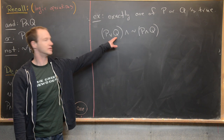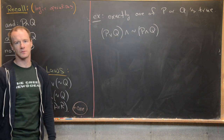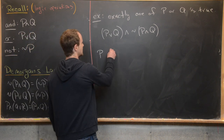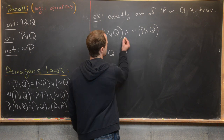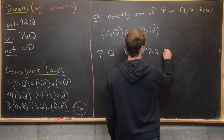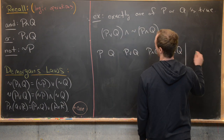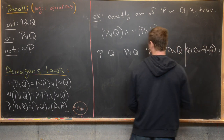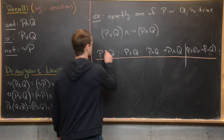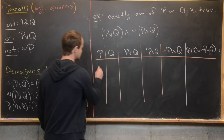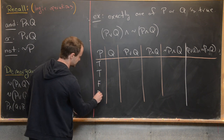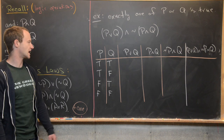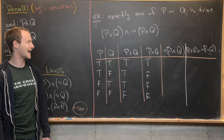Reading the compound expression: 'P OR Q is true, AND they are not both true.' Let's build the truth table with columns P, Q, then P OR Q, then P AND Q, then NOT(P AND Q), and finally (P OR Q) AND NOT(P AND Q). P and Q take values true/true, false/false, true/false, false/true. Filling in OR and AND is straightforward from previous work.